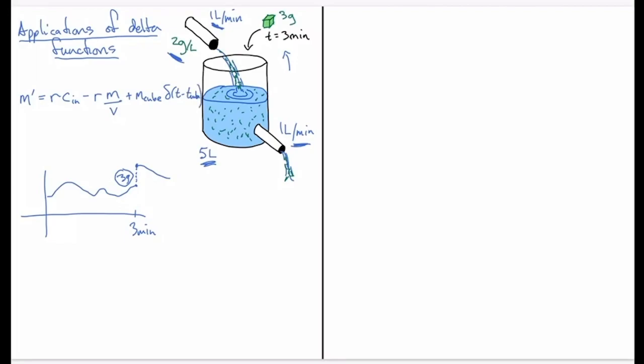All right, so that is the equation. Let's fill in some of those details. So we're going to get m prime equal to two minus one over five, which is the one over the volume, the inflow rate is one liter, so that's the one, and then multiplied by m plus three times delta of t minus three.